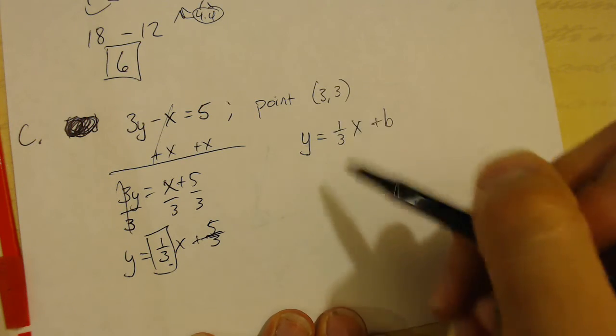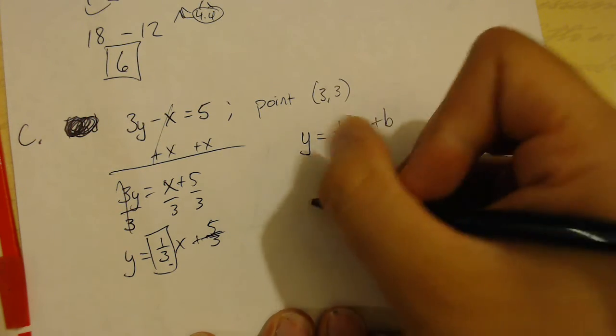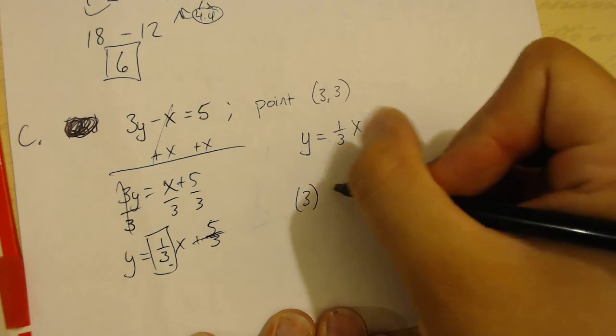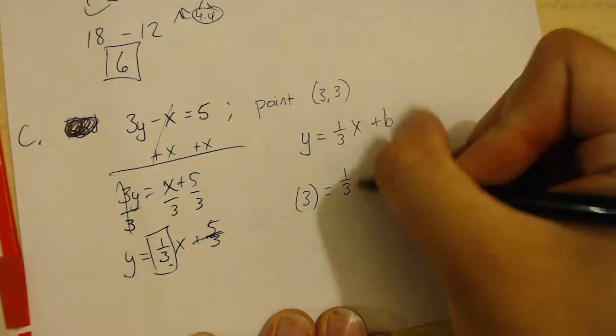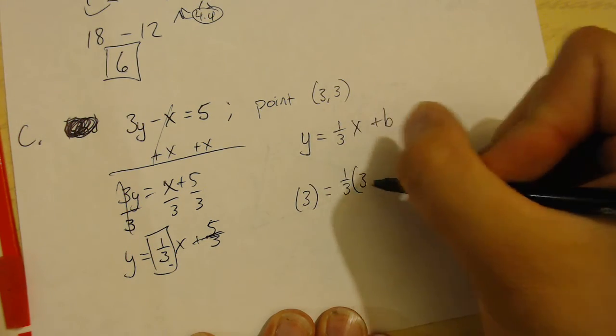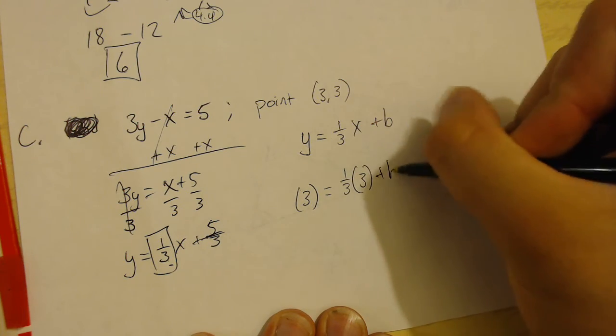And we know that our line passes through the point 3 comma 3. So, we can substitute the x and the y into this equation. So, instead of writing y, I'll write 3 equals 1 third times 3 instead of x plus b.